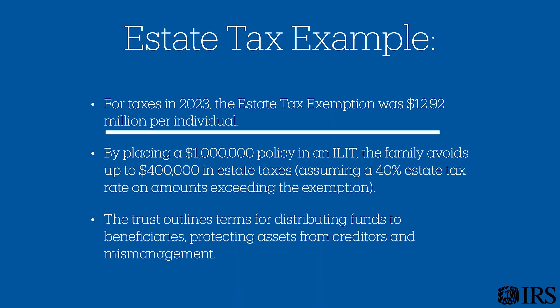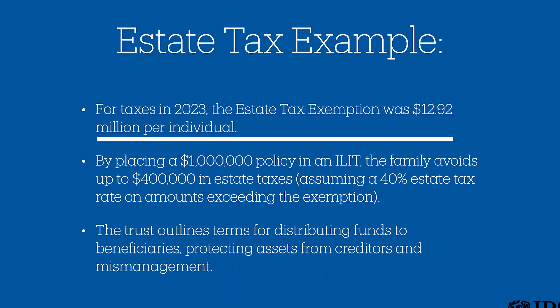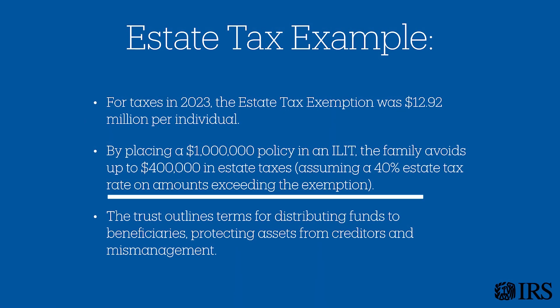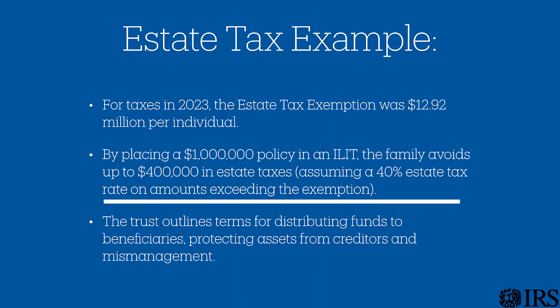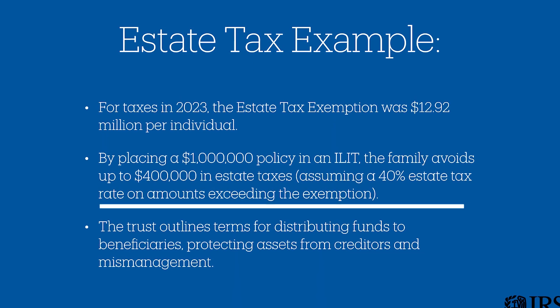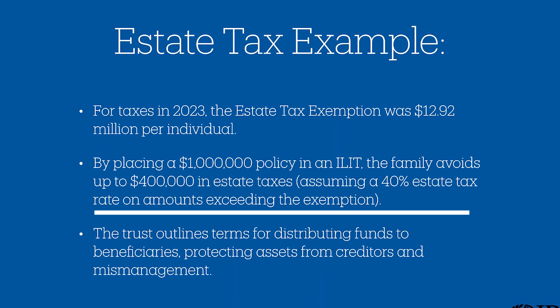Let's get into some estate tax examples, which come directly from the IRS. For 2023, the estate tax exemption was about $12.9 million per individual — that could be coming down after 2025. We'll see what happens with the new administration: do they extend this or bring it back down to maybe $5 million or $3 million? That estate tax is always a moving target. By placing the $1 million policy in an ILIT, that avoids up to $400,000 in estate taxes, assuming a 40% estate tax rate and that the $1 million would have been exceeding your total exemption of $12.9 million.